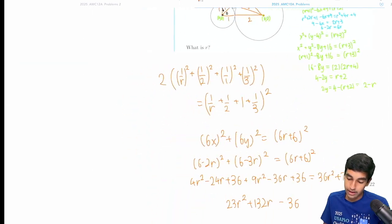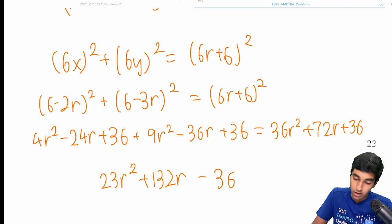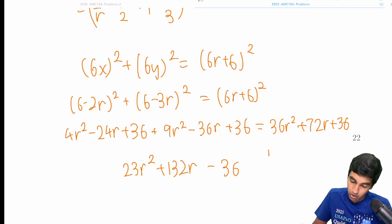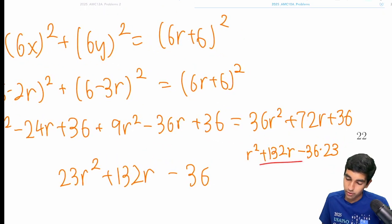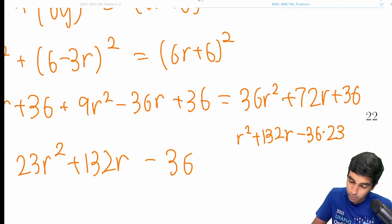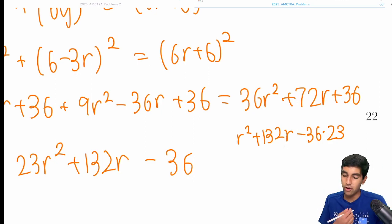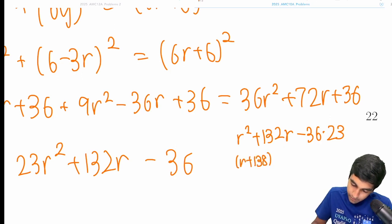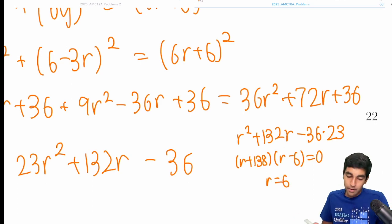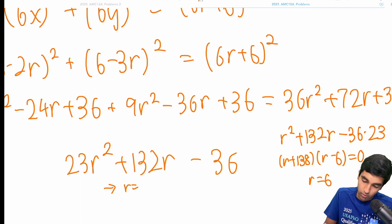Now a neat trick for actually solving this quadratic here is we can just solve the quadratic r squared plus 132r minus 36 times 23. And then whatever solutions you get for here, we divide by 23 to get the solutions for there. 36 times 23. Let's try and guess and check here. What about 6 times 23? That's 138 and 6. We could say this is r plus 138 times r minus 6. And this does indeed work. So r equals 6 because r cannot be negative. And then we divide by 23 here to get r equals 6 over 23. And that's our final answer.